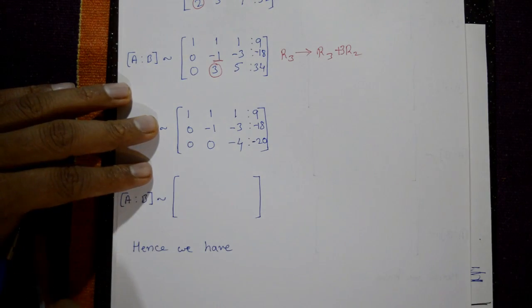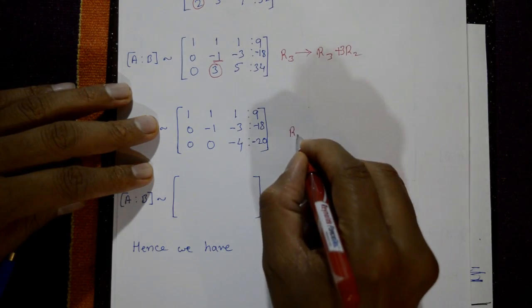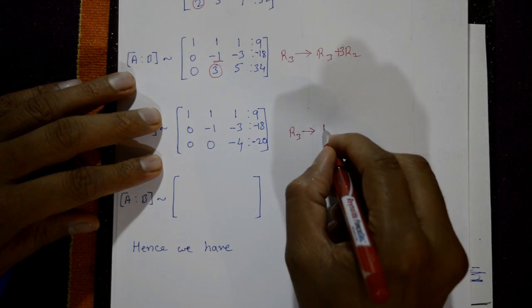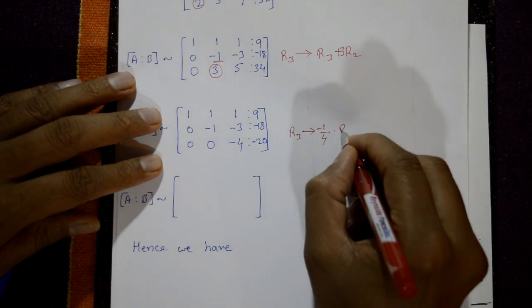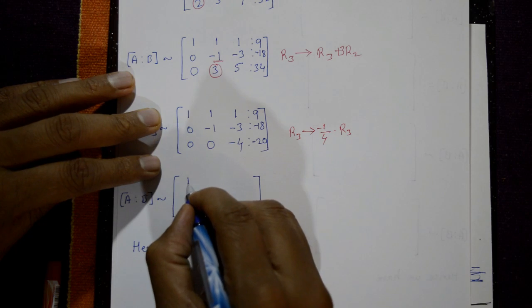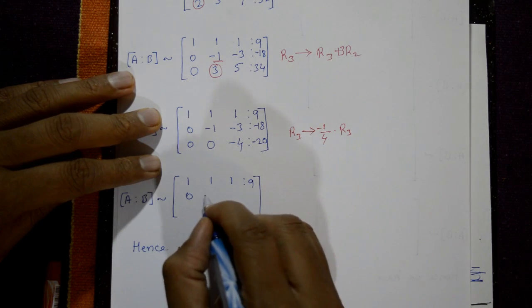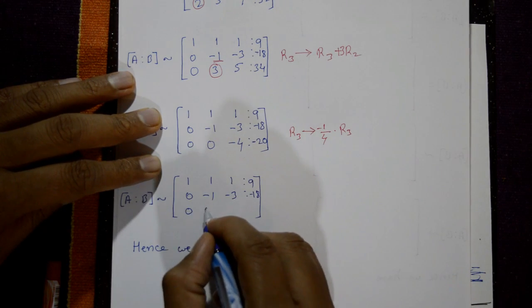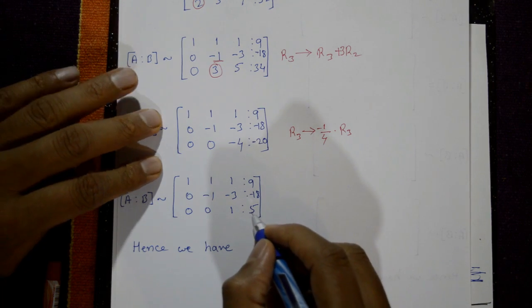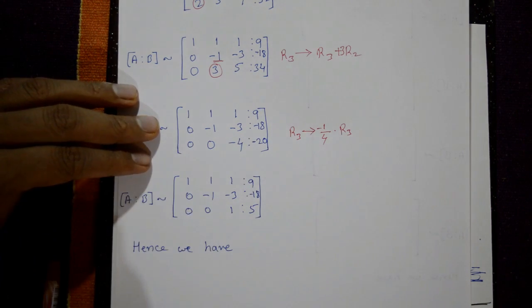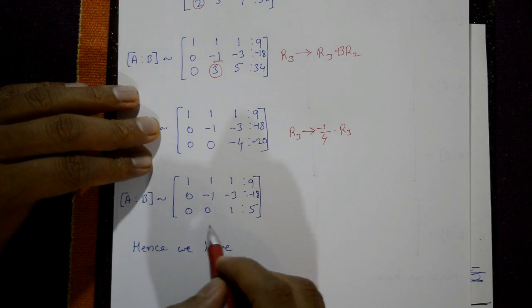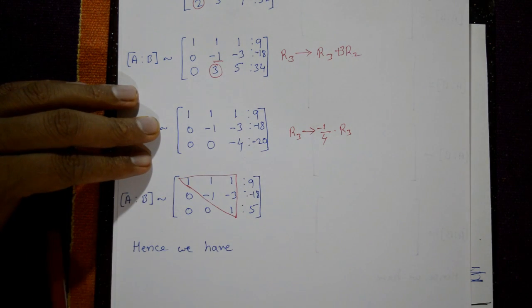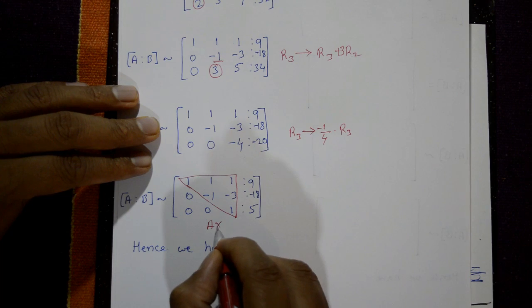Now for R3, apply R3 = (-1/4)·R3. The first two rows remain unchanged. Dividing the third row by -4 gives: 0 0 1 | 5. This is now an upper triangular matrix.